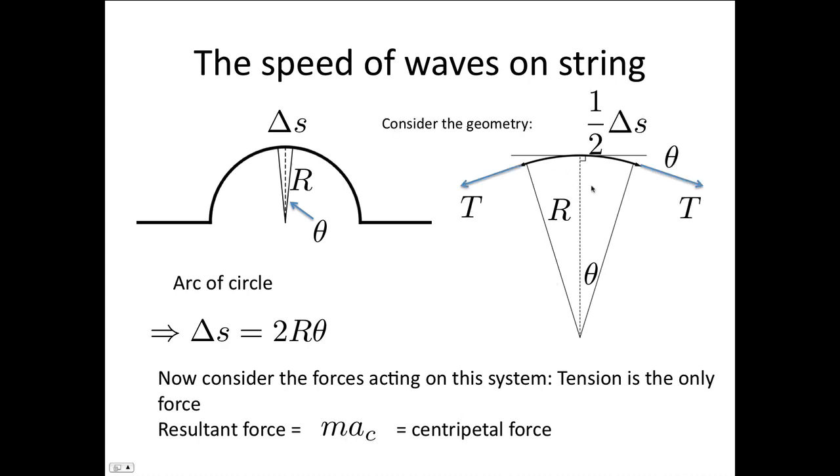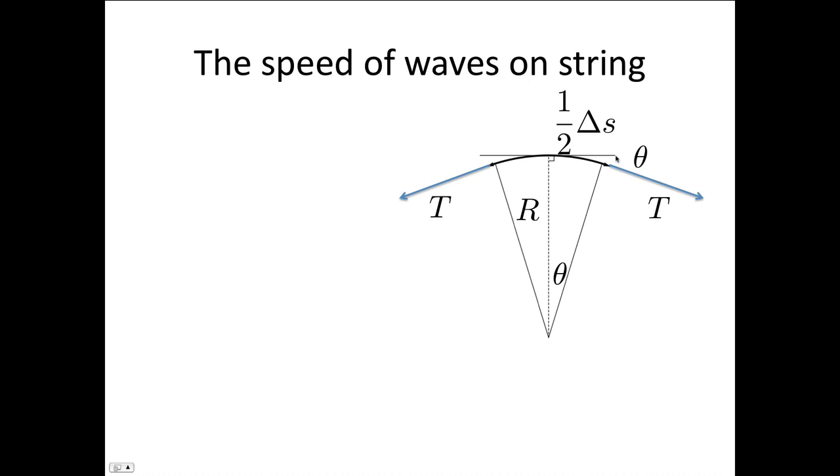This makes the geometry a bit more clear. The tension is pulling on the end of this increment down here and on the end of this increment here. Because the radius makes an angle of 90 degrees with the circumference of the circle, this angle in here is equal to theta. Now what we do is move this tension here, this tension here, so that we're adding them head to tail.